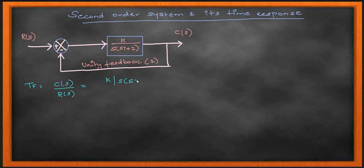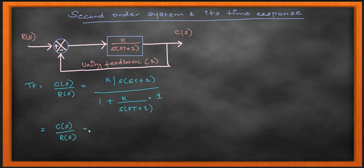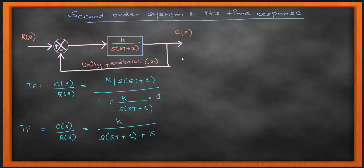So how does the control system block diagram look like? It looks in this manner. You have a unity feedback which is fed to your negative control. Then the transfer function is given by k divided by s(sT + 1), divided by 1 plus k divided by s(sT + 1). Simplification of that expression gives my second order control system equation.